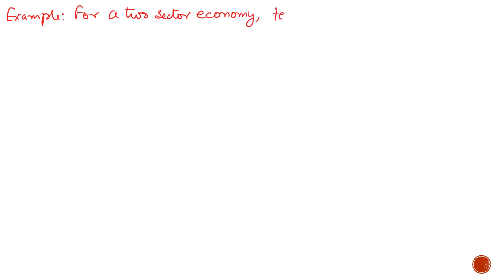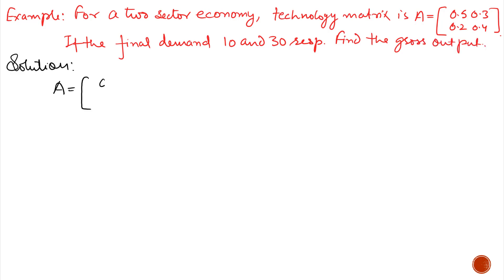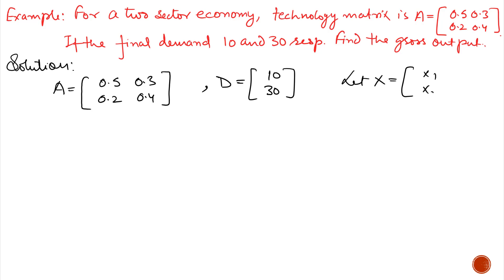Example 2. For a two-sector economy, the technology matrix A is given as [0.5, 0.3; 0.2, 0.4]. If the final demand for the two sectors is 10 and 30 respectively, find the gross output. A is given as [0.5, 0.3; 0.2, 0.4], D is given as [10; 30], and let X equal [X1; X2]. First we calculate I minus A.